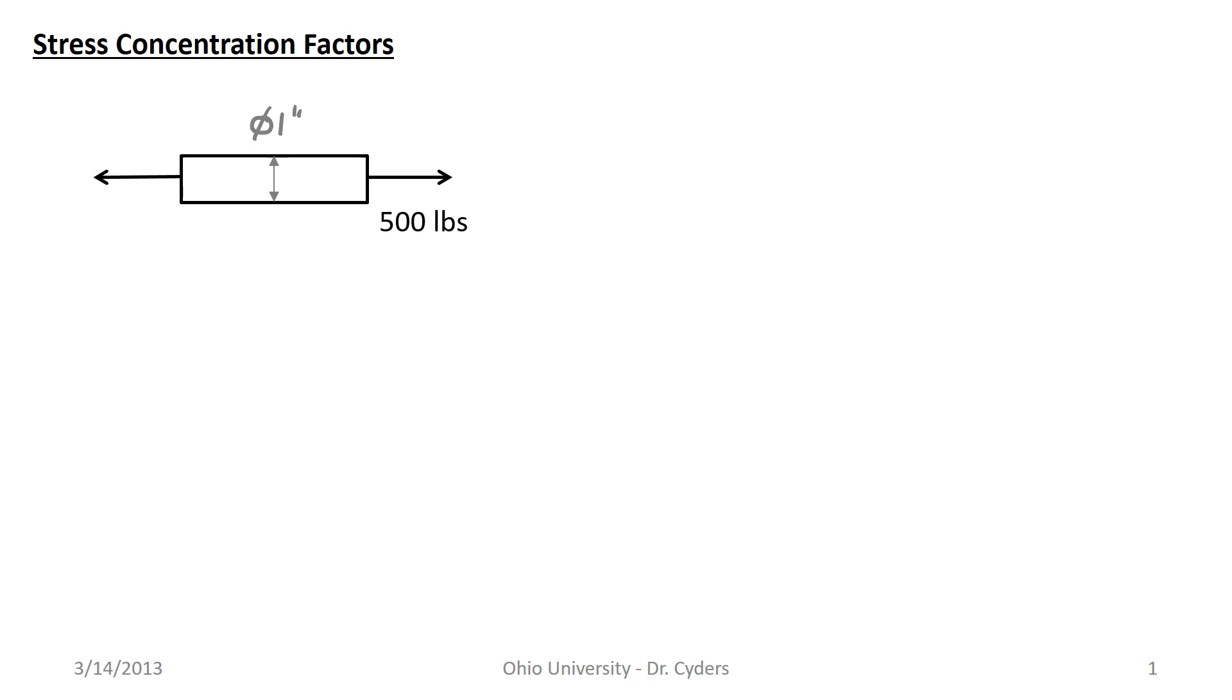There's no change in strain. The strain is the same everywhere in this part. The stress is simply described by P over A, which comes out to be 4P over pi D squared in this case. Very simple problem. If we put 500 pounds on this one inch diameter pin, we get 637 psi of stress.